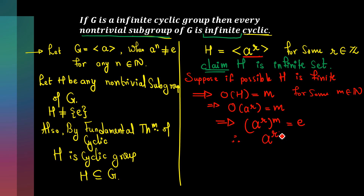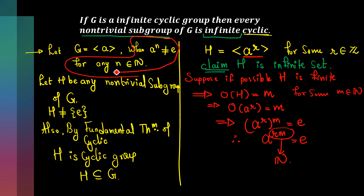So we found there exists a power of a — namely a^(r*m) — which equals the identity. But we started with the condition that there does not exist any natural number n such that a^n equals the identity. Now students might ask: how are we sure that r*m is a natural number? We are getting a contradiction with this statement, but r*m may or may not be a natural number.